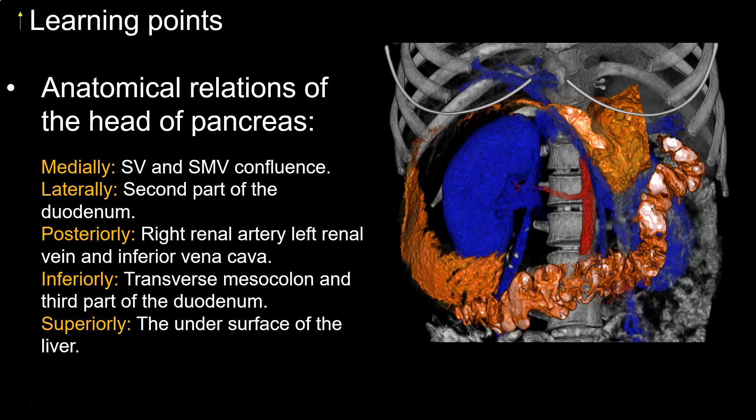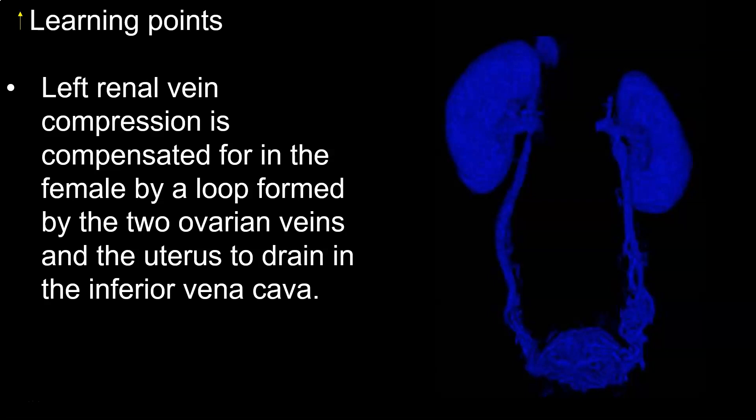Posteriorly: the right renal artery, the left renal vein, and the inferior vena cava. Inferiorly: the transverse mesocolon and the third part of the duodenum. Superiorly: the undersurface of the liver. The left renal vein compression is compensated for in the female by a loop formed by the two ovarian veins and the uterus to drain into the inferior vena cava. The male is denied this privilege because the scrotal septum prevents communication between the two gonadal veins.